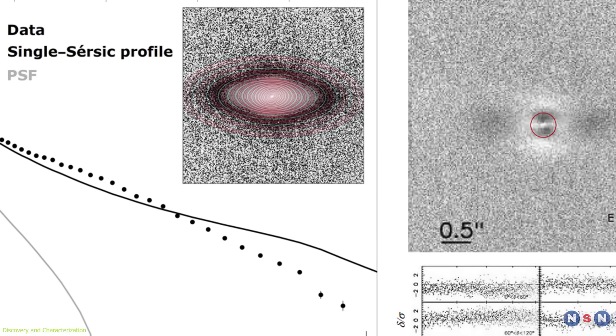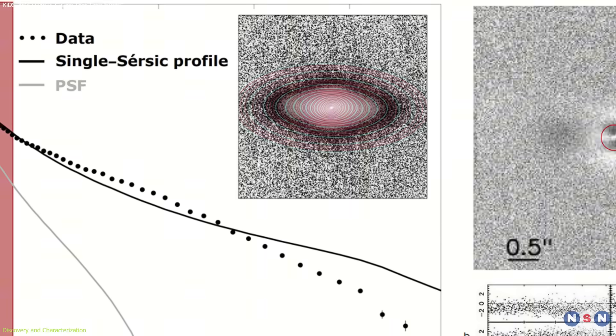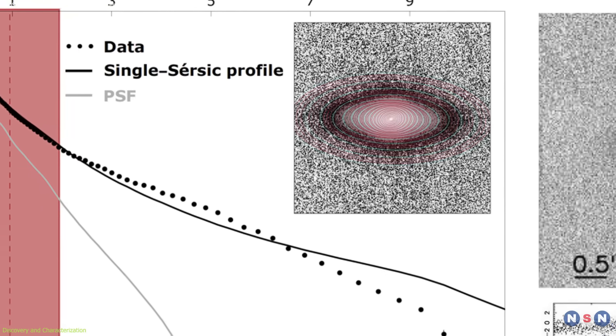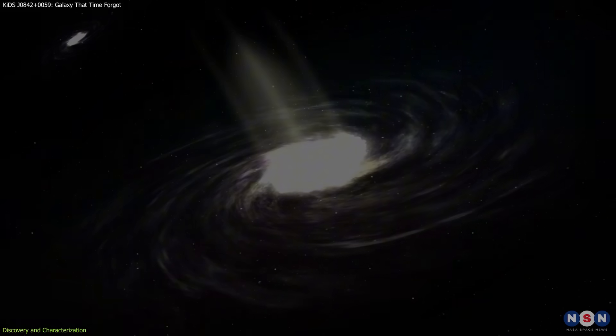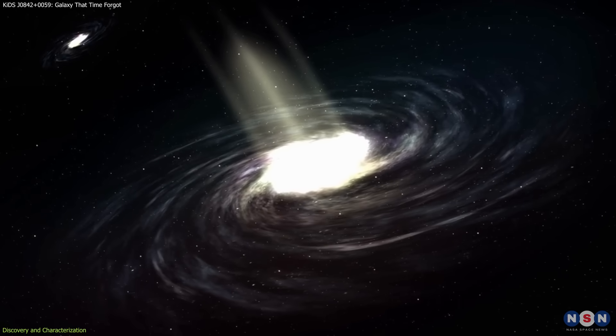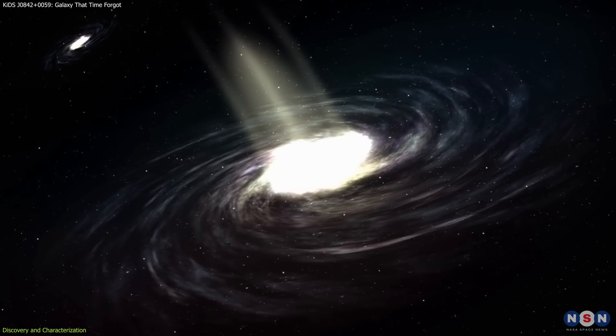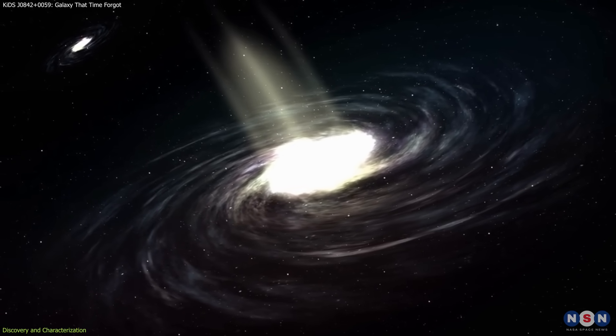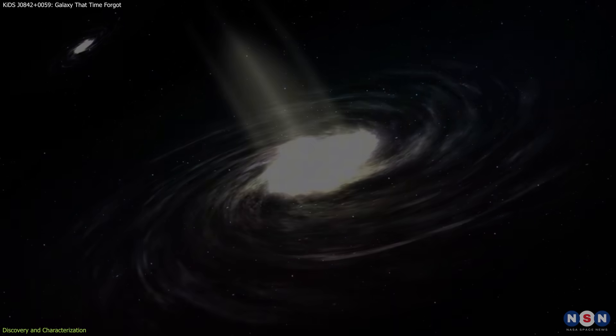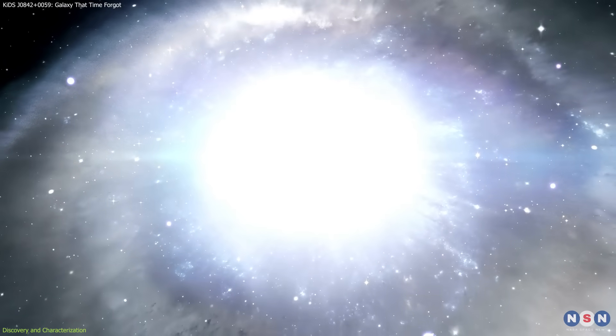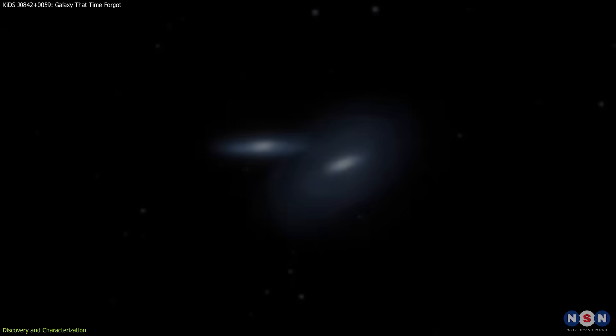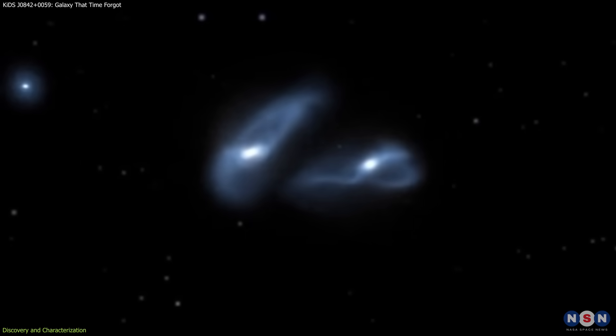The new observations allowed researchers to measure the galaxy's structure and stellar population with high precision. The results confirmed that KIDS J0842+0059 is both compact and inactive, matching theoretical models for a galaxy that formed rapidly in the early universe and was never significantly altered afterward.